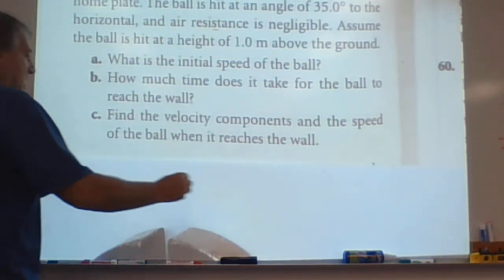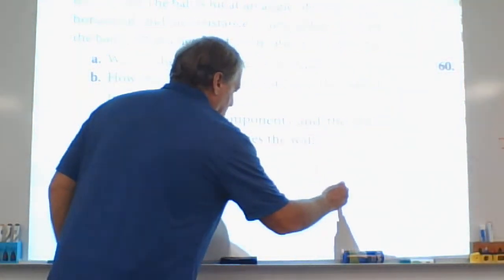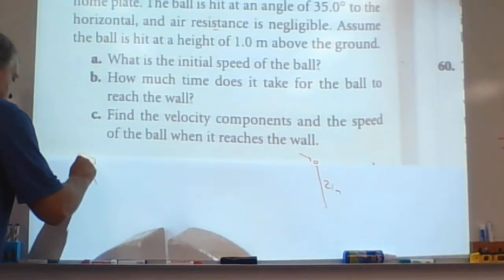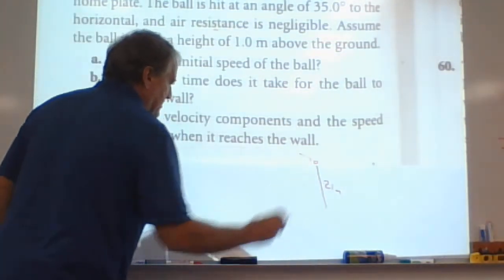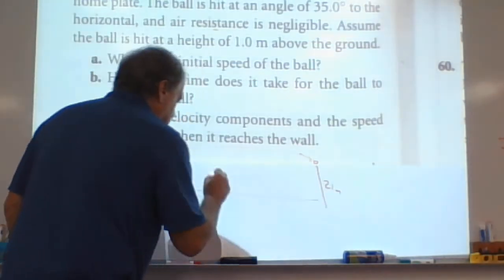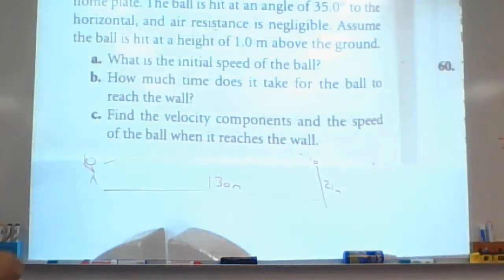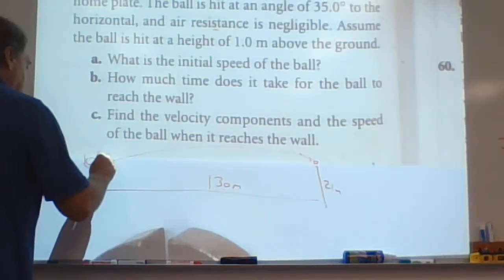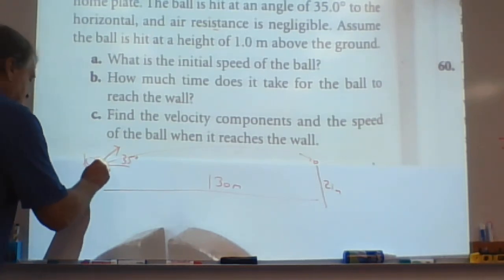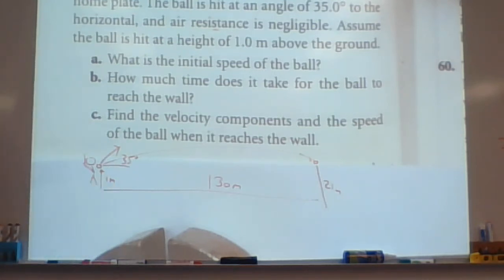A player hits a home run and the baseball just clears the wall. This one, I think we're going to need a picture. So let me start to get a picture here. A player hits, clears the wall 21 meters high. So a pretty high wall over here. This is 21 meters. We know the ball is just clearing over here and the baseball player with his bat in his hand, whacked it just like this. And it just clears the wall 21 meters high. It is located 130 meters from home plate. So we know that this is 130 meters. The ball is hit at an angle of 35 degrees. So this ball here is hit at 35 degrees to the horizontal. Ignore air resistance. Assume the ball is a height of one meter above the ground. So it has an initial height here of one meter above the ground. What is the initial speed of the ball is what it's asking for.